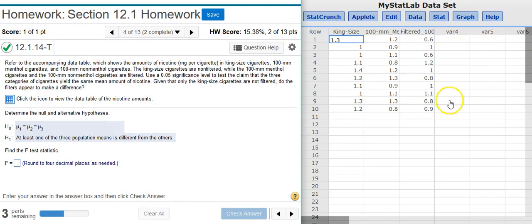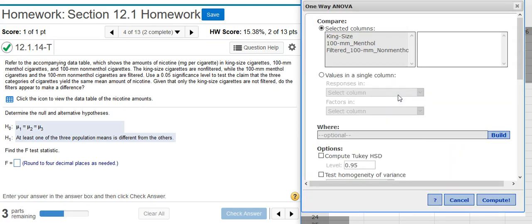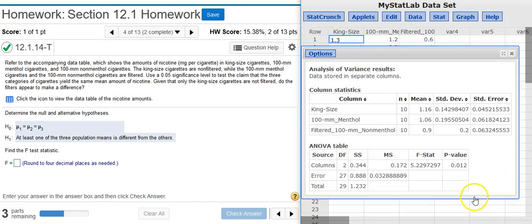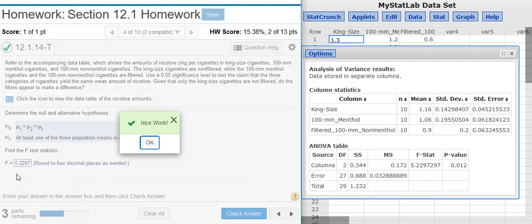Okay, now inside StatCrunch, I have my data. So I go to Stat, ANOVA, One-Way. Here in the Options window, I'm going to select all of my columns and I press Compute. And here we have, in the Results window, the ANOVA table, which lists my F-statistic. I'm asked to round that to four decimal places. Nice work!